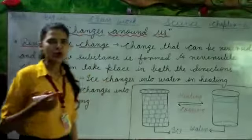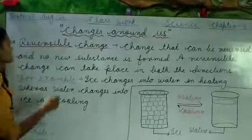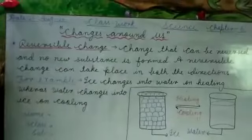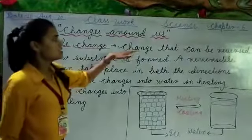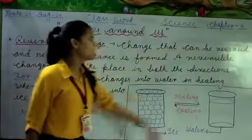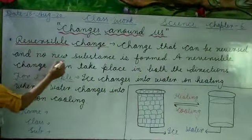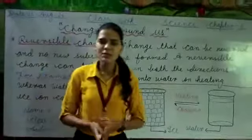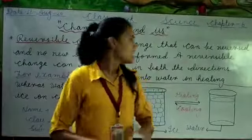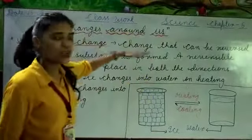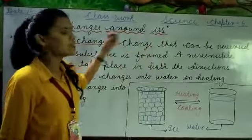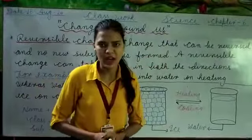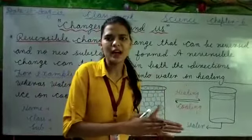So now we are going to discuss the topic reversible change. Reversible change is the change that can be reversed and no new substances form. Reverse means if it was in the first state, we can go back to that state.